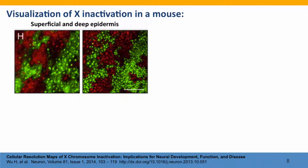What they did was, using recombinant DNA techniques in mice, they developed a strain of mouse where one X chromosome — let's say the maternal X — if it was active, would produce a protein that fluoresces green, and the other X chromosome — let's say the paternal X — produced a protein that glows red.